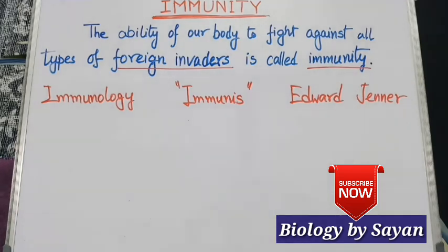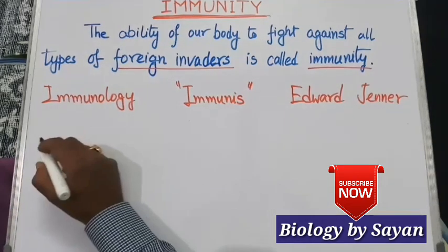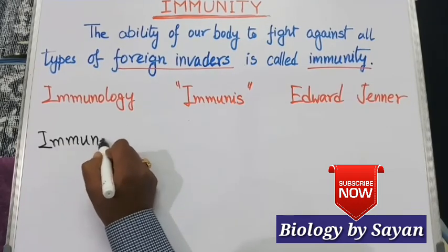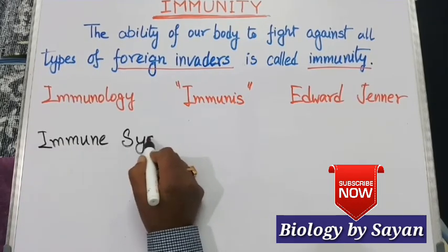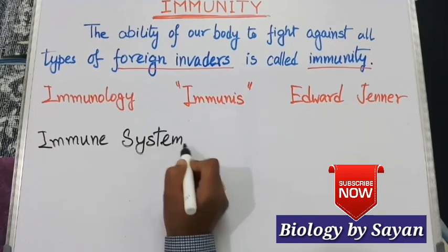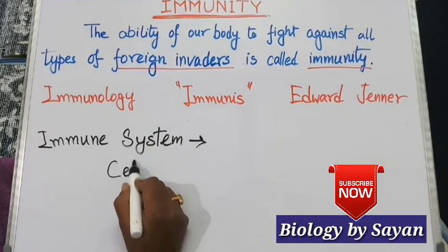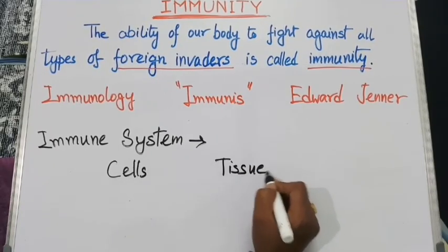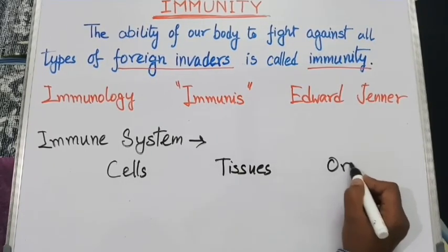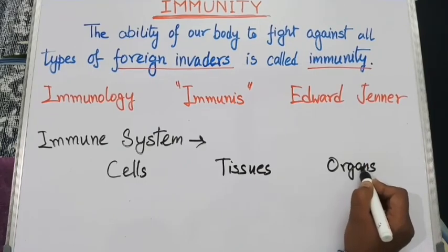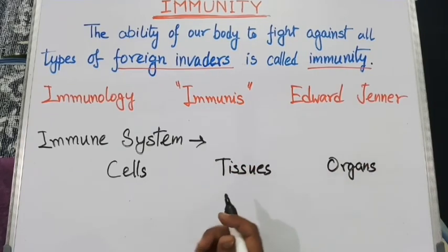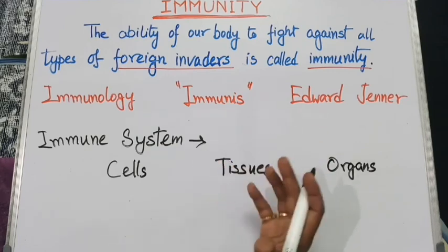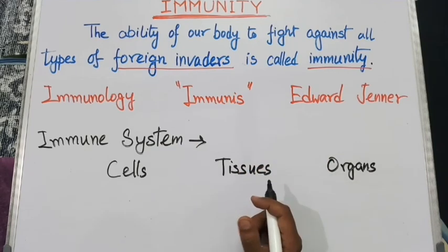Now let's know about the immune system. Different types of cells, tissues, and organs that all act together to help build immunity in our body actually form our immune system.